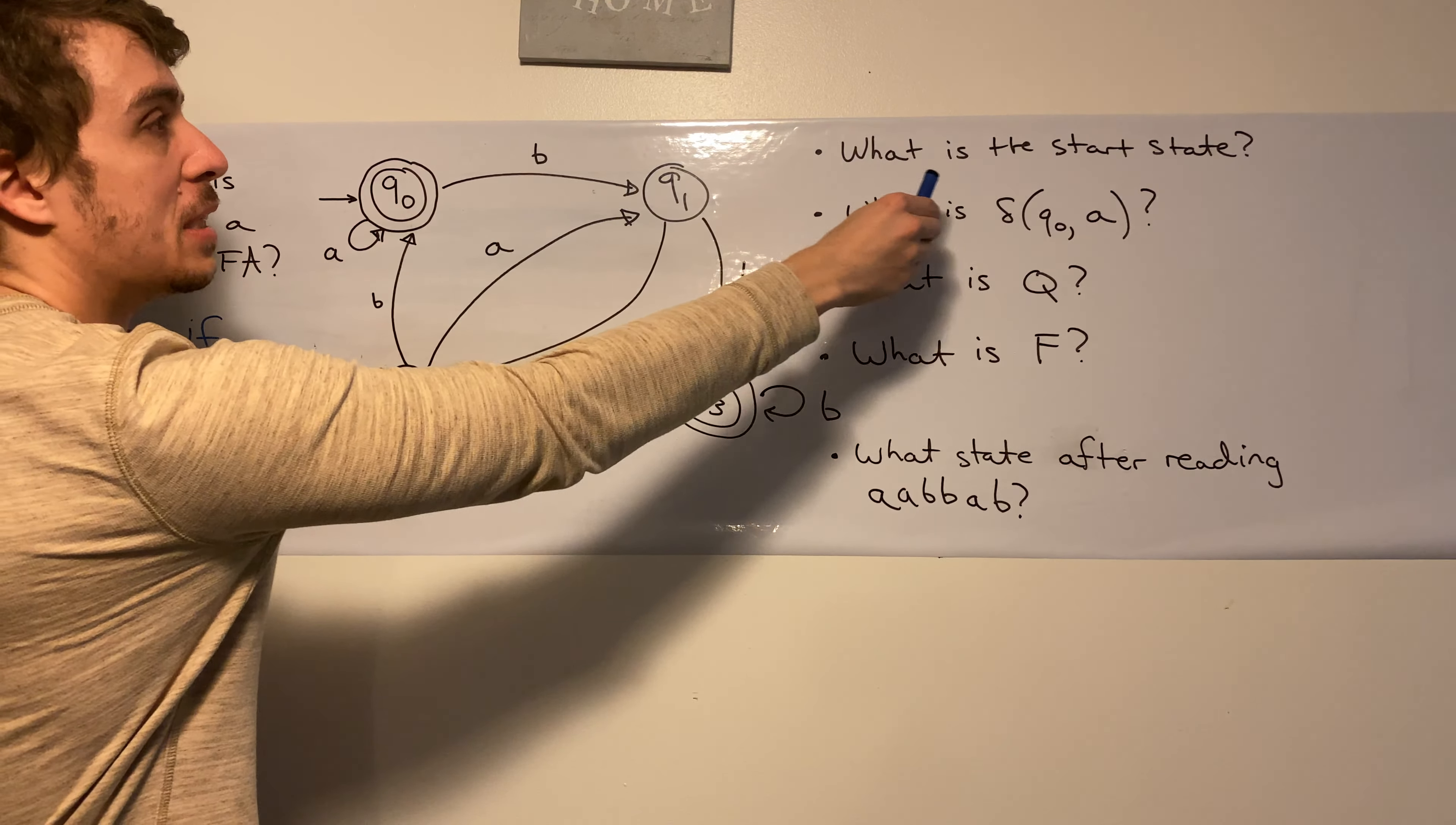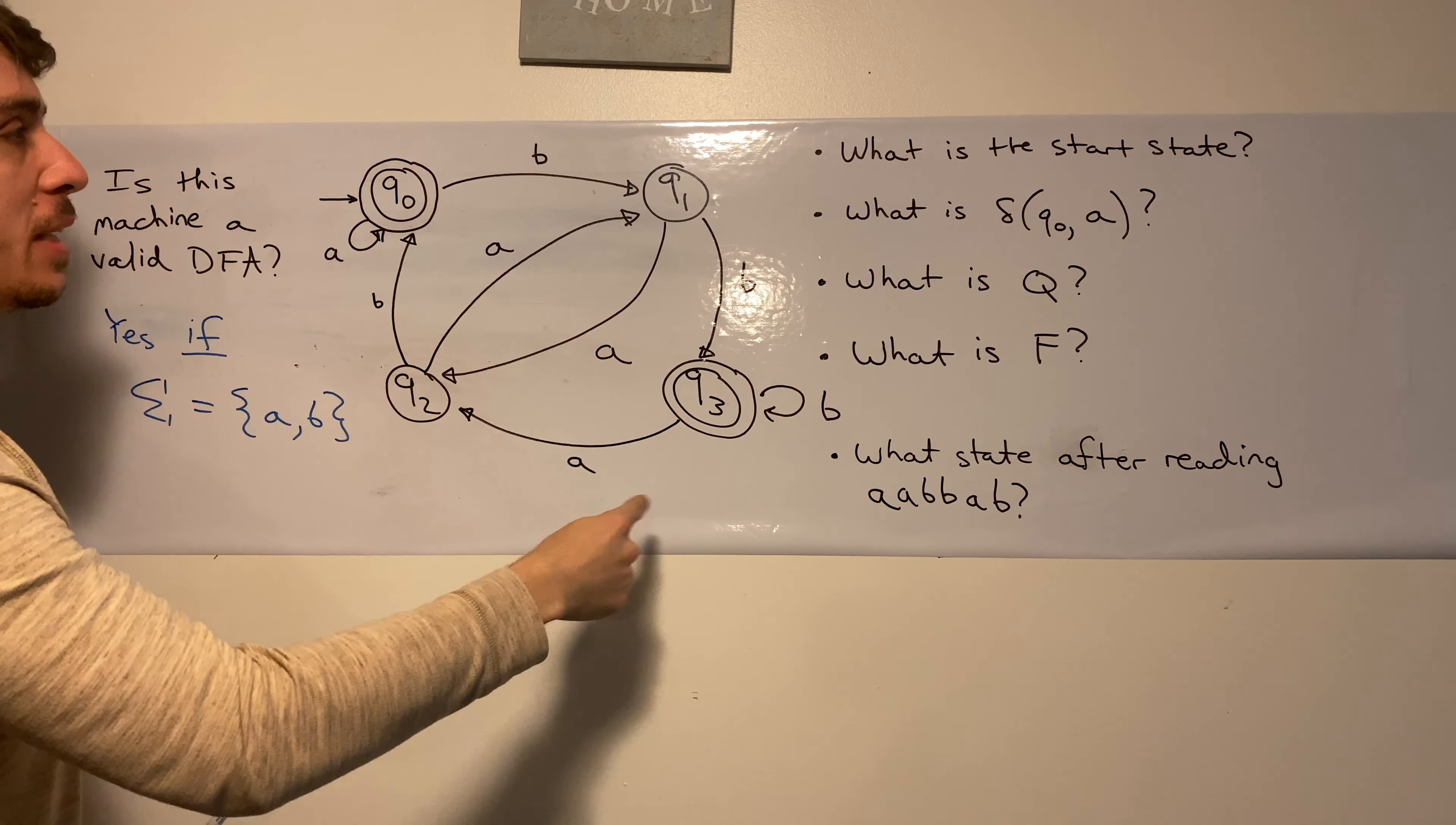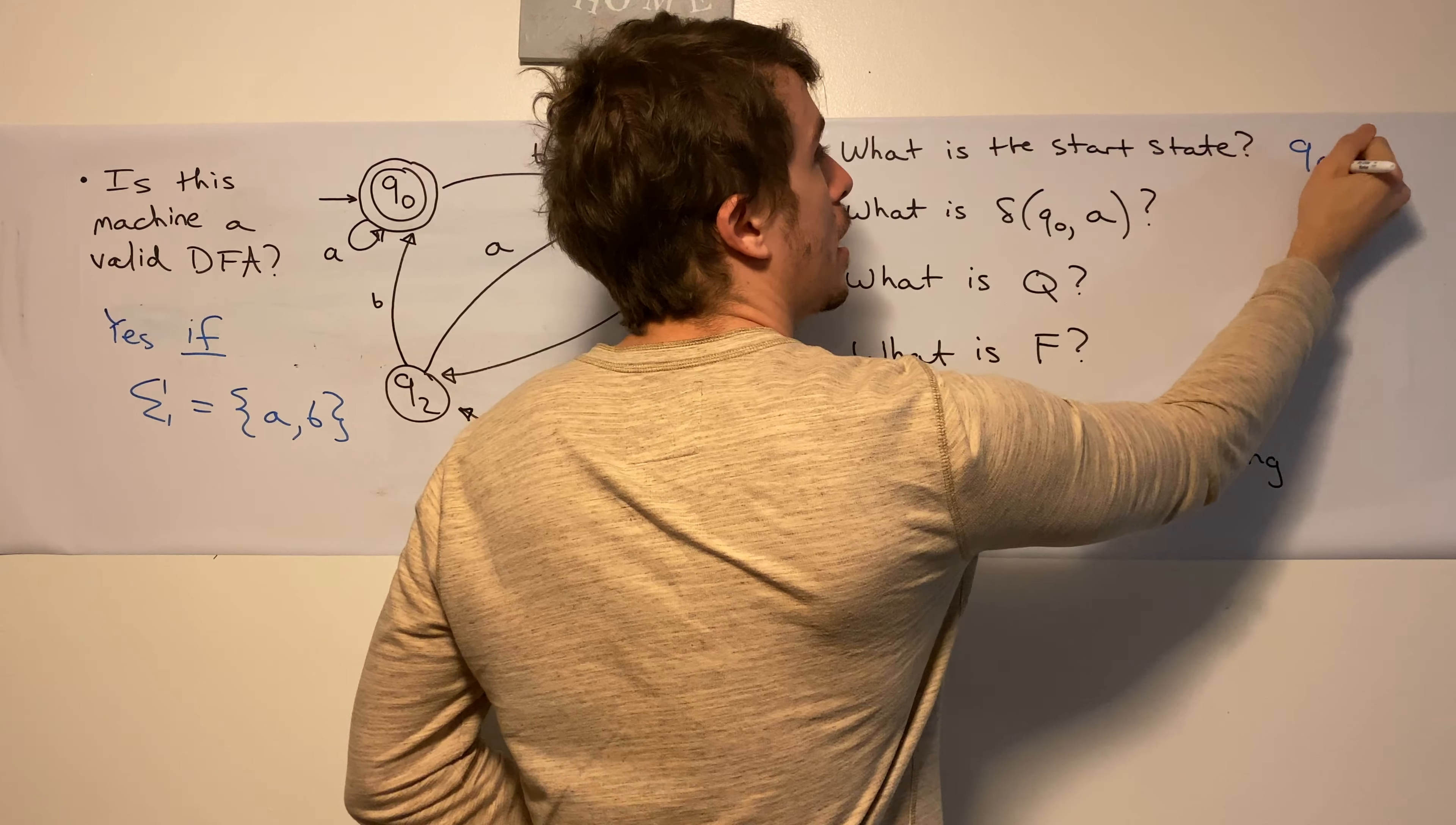So what is the start state of this DFA? Well, in this case, we just have to find wherever there's an arrow coming from nowhere in this machine, which happens to be Q0 in this case. So the answer to this question is Q0.